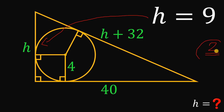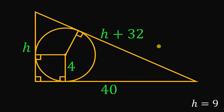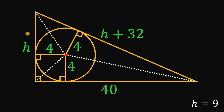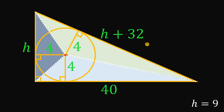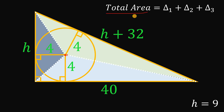Now let's begin with our second solution. To answer this question, we're going to use the area of this figure. Take note that all of these segments are radii of the circle, meaning all of these measures are 4 units. From the center of the circle, we connect to all the vertices of this triangle. This creates 3 smaller triangles — the first, second, and third triangle.